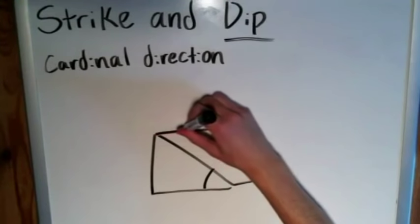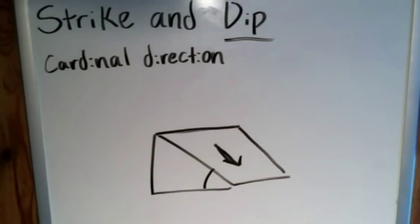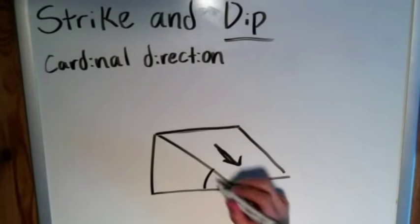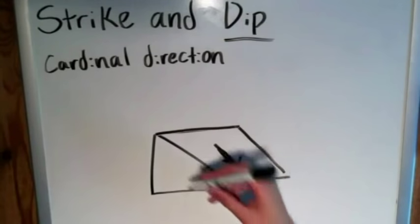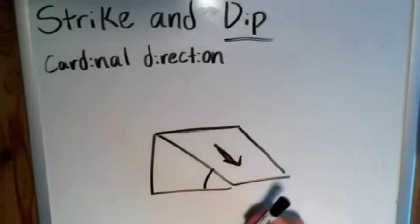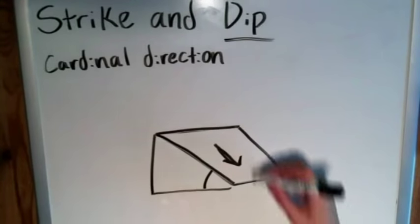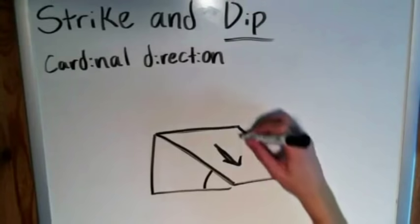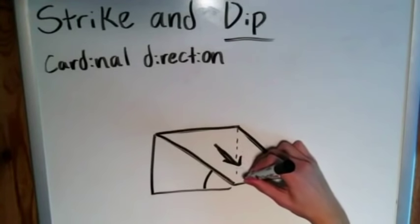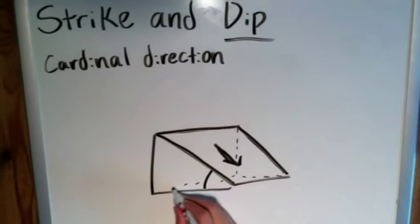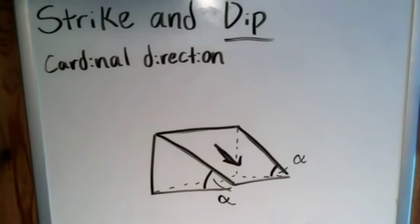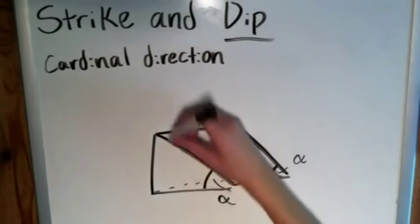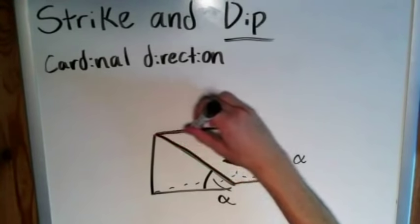The strike is always a cardinal direction that is perpendicular to the direction of dip, running along this line. When you look at it, since the dip makes contact with the surface at this angle, the strike is going to be on the lines not involved in forming that dip angle. This line forms that angle, and the line on the other side is a mirror image. So the lines completely uninvolved in forming this angle are these two, and therefore those must be the direction of strike.